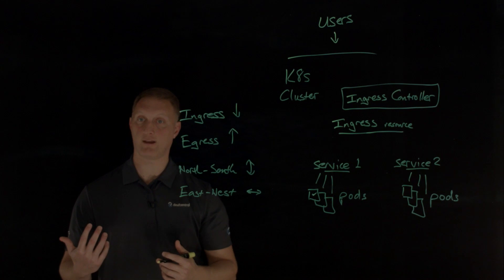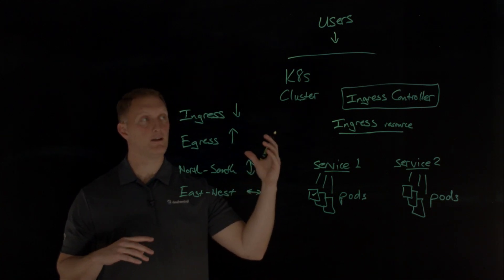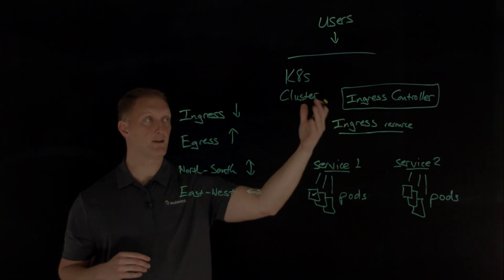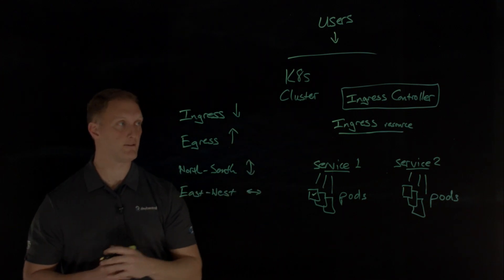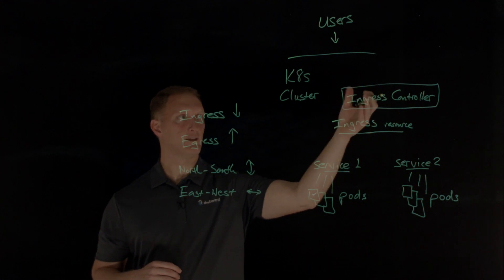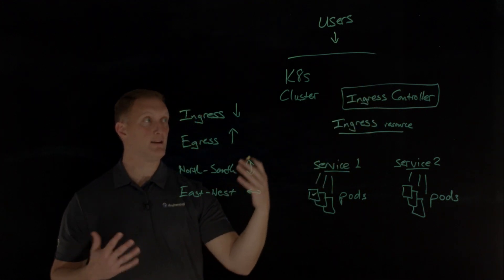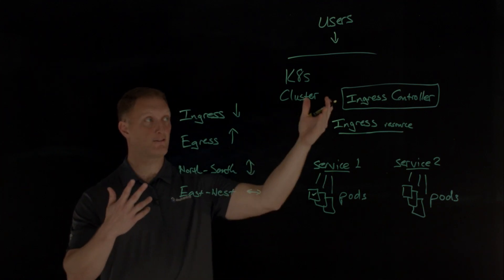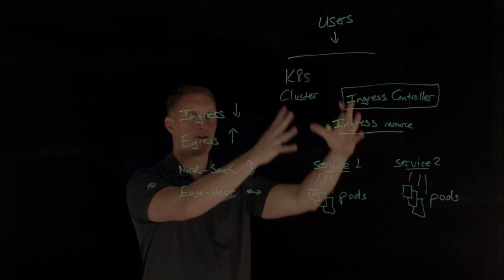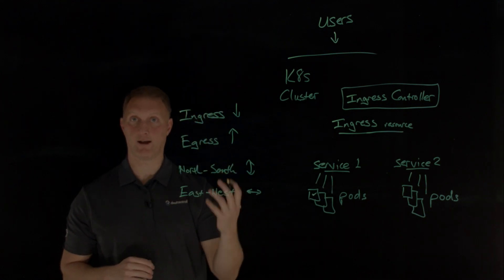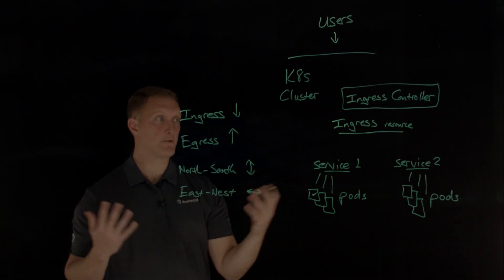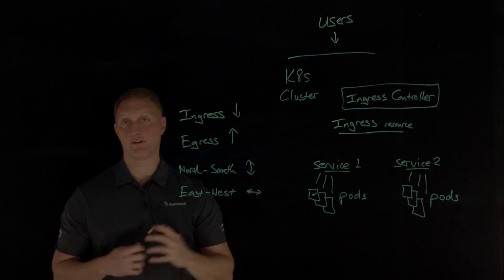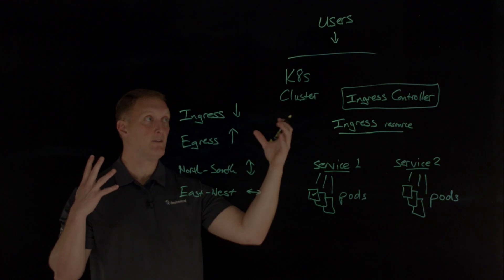Another function is authentication and single sign-on — you can enable users to log in to multiple applications within the cluster with a single set of credentials by implementing single sign-on using things like OIDC (OpenID Connect) at the ingress controller. And finally, a web application firewall can be installed on the ingress controller, which is a perfect place since it's the single point of entry and exit into and out of the entire Kubernetes cluster — a great place to define security policies in the form of a WAF.